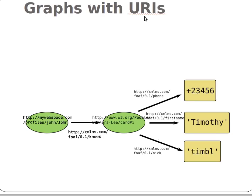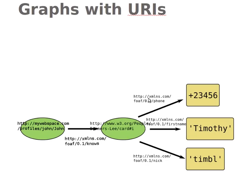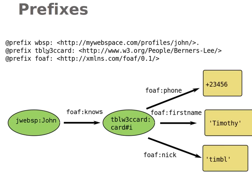We can use URIs for the properties, using prefixes as we learned before, or we can use the full URIs in our predicates. For example, we can define a prefix — say 'sv' — for a full URI, and then write 'sv:phone' instead of the full URI. As a reminder, prefixes are defined at the top of our RDF file and used as short names throughout the data instead of repeating the full URI.